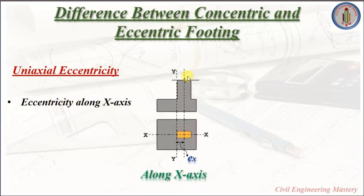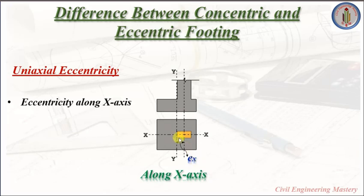You can see here the column load which is acting on the footing is moving away from the center of gravity of the footing in the direction of x. That distance we can call the eccentricity distance about the x-axis.